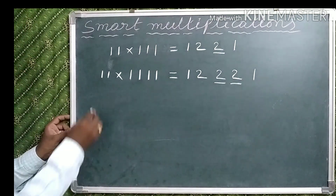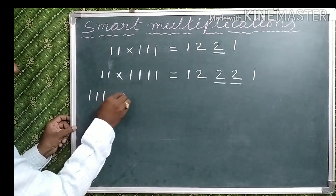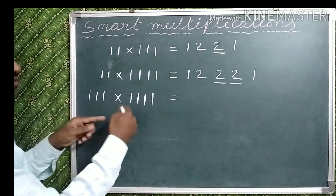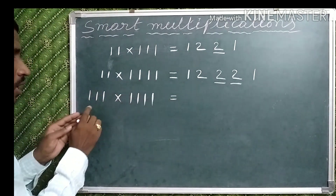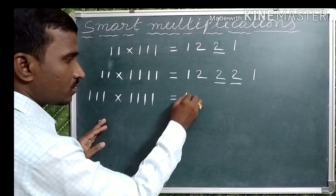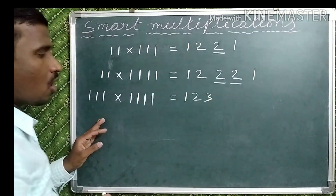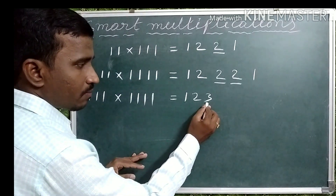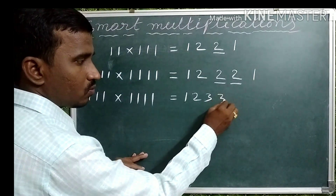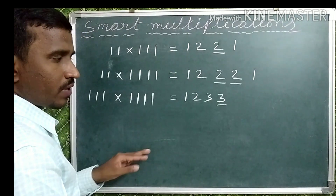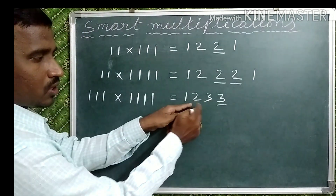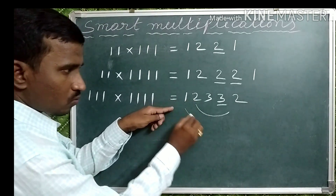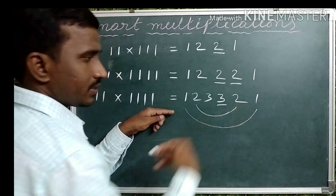Observe one more example: 111 into 1111 — 3 ones and 4 ones. Least number of ones is 3, so write 1, 2, 3. How many ones are different? Only 1, so the highest number (3) repeats only one time. Then write before 3 in descending order: 2, 1. That is the answer: 1, 2, 3, 3, 2, 1.